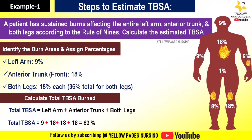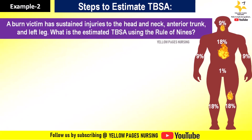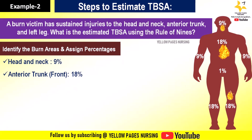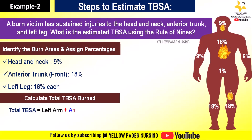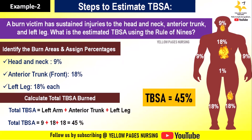Let's try another example. A burn victim has sustained injuries to the head and neck, anterior trunk, and left leg. What is the estimated total body surface area using the Rule of Nines? Identifying burn areas and assigning percentages: head and neck — 9%, anterior trunk — 18%, left leg — 18%. TBSA = 9 + 18 + 18 = 45%. So the total body surface area burnt is 45%.